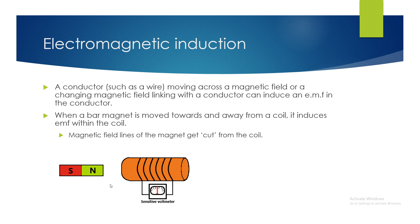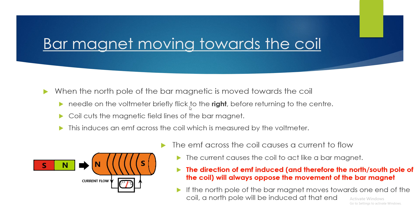The direction of the induced EMF depends on how we move the bar magnet. When the north pole of the bar magnet is moved towards the coil, the needle on the voltmeter will briefly flick to the right before returning to centre. This is because the coil cuts the magnetic field lines of the bar magnet, inducing an EMF across the coil which the voltmeter detects. This induced EMF causes a current to flow in a particular direction, which allows the coil to become a temporary magnet behaving like a bar magnet with a north and south pole.